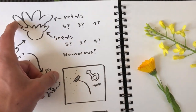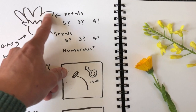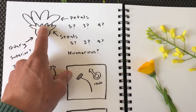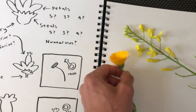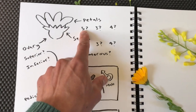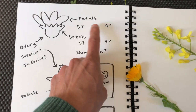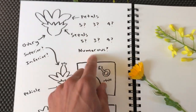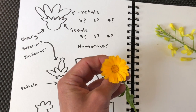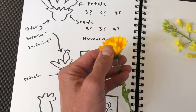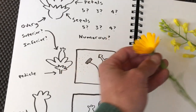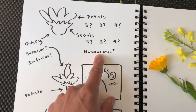We want to pay attention to the numbers of petals and their arrangement, the number of sepals — which are the leaf-like structures beneath the petals — and whether those come in increments of five, three, or four, or whether they are odd numbers or just numerous. In plants that have ten or more petals and that are variable, we will just call those numerous.